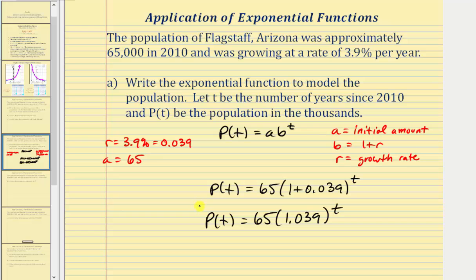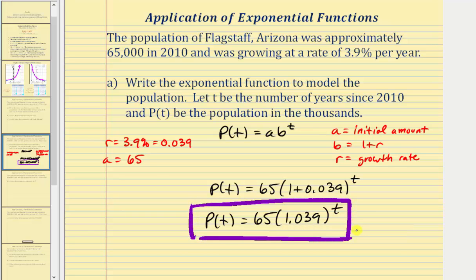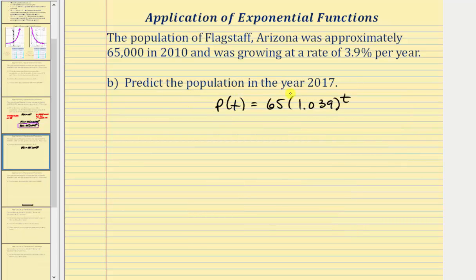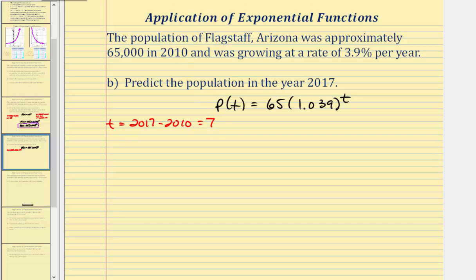Now we can use this function to answer parts b and c. For part b, we're asked to predict the population in the year 2017. Since t is the number of years after 2010, t equals 2017 minus 2010, which is seven. So we want to find the function value p of seven: 65 times 1.039 raised to the power of seven.